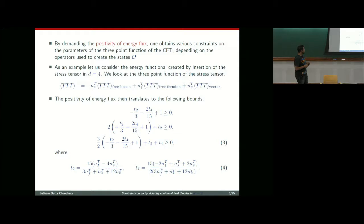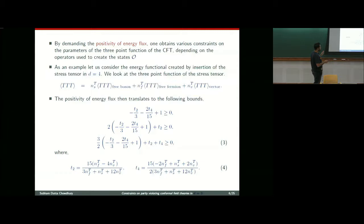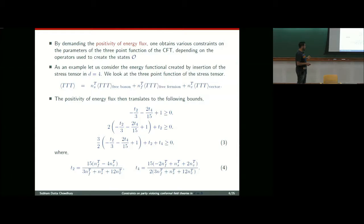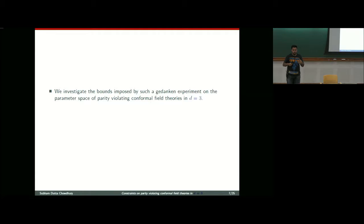In the well-known TTT three-point function, there is a similar decomposition as in D equals 3, but without parity-violating structures. Instead we have a TTT vector corresponding to the contribution due to gauge fields. The positivity of energy flux constraints then mean that certain inequalities must be satisfied for any conformal field theory, where T2 and T4 are dimensionless parameters depending on ns, nf, and nv. We want similar constraints for conformal field theories in D equals 3, but now there will also be a parity-violating part.